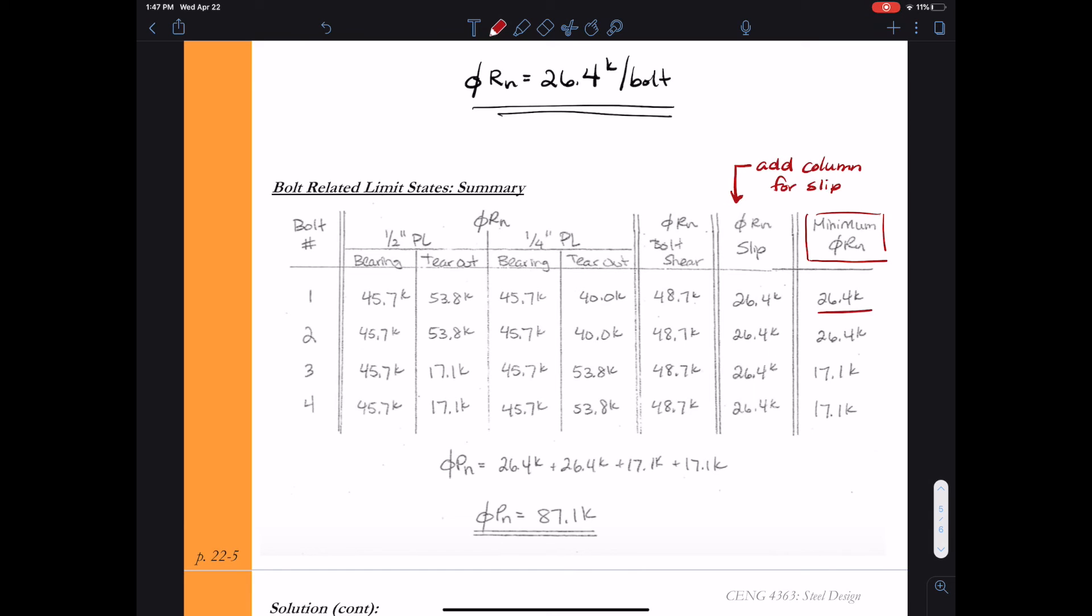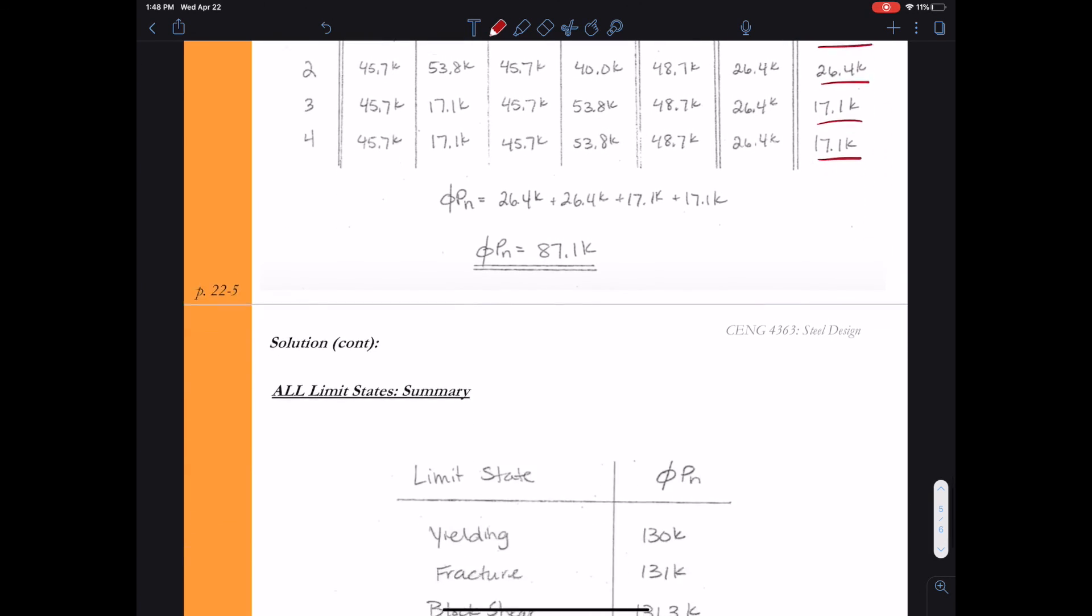Then I take the minimum at each bolt number and I see that now for bolts one and two, the slip resistance will control. But at bolts three and four, the tear out still controls for the half inch plate. Then we add up all the minimum φRn's for each bolt and that gives us φPn for the bolt related limit states is now 87.1 kips.